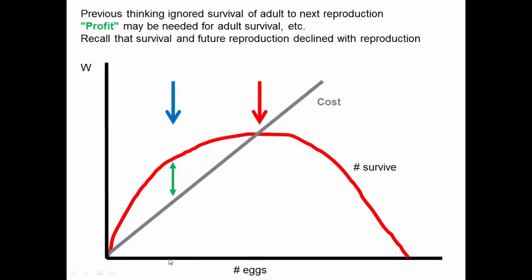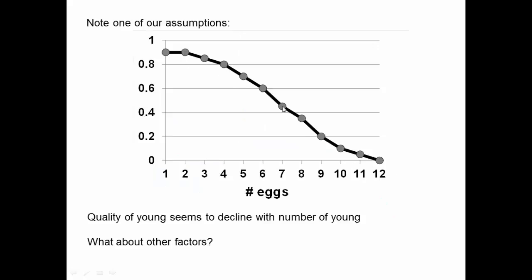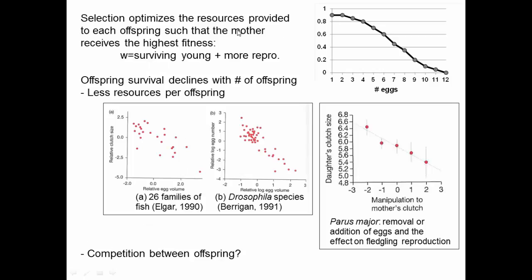One reason we may see less reproduction in nature than expected is by considering the long-term reproduction of the adults. By having less this year than would maximize fitness for this year, they may be ensuring more reproduction in the future. These tradeoffs between survival and reproduction can get quite complex — the red line was calculated from tradeoffs within one clutch, while the explanation also requires considering the effects of reproduction on the adults' future clutches. Selection optimizes the resources provided to each offspring so that the mother receives the highest fitness: her fitness equals surviving young plus more future reproduction.